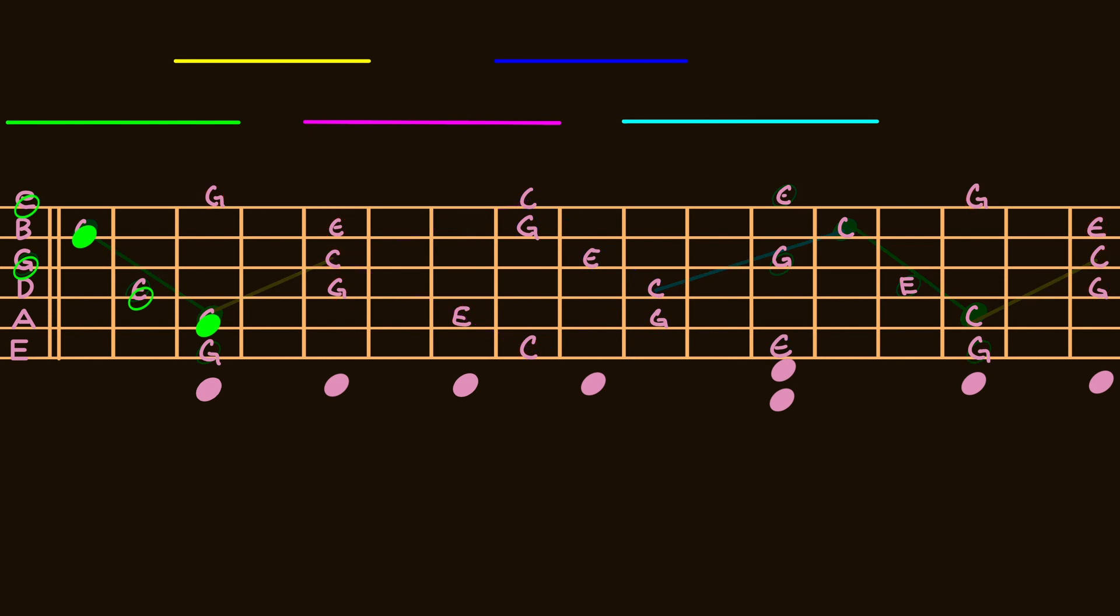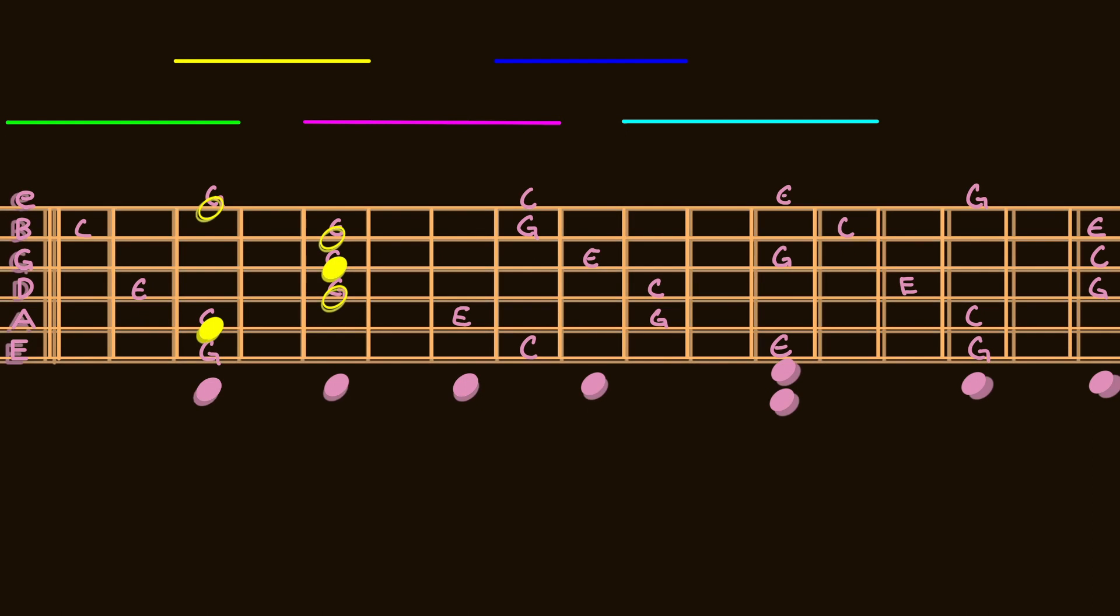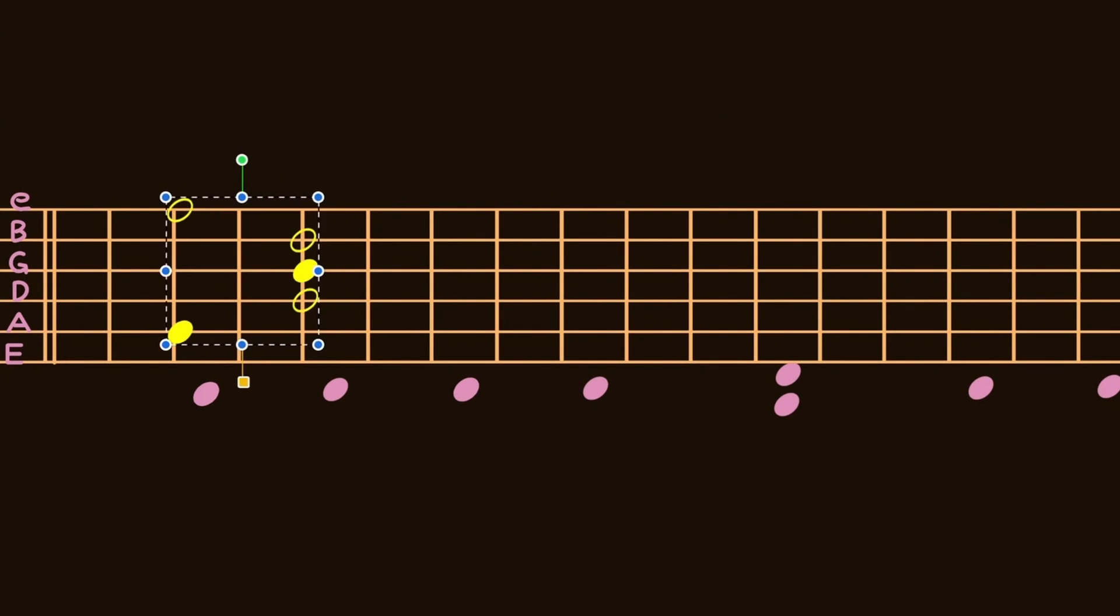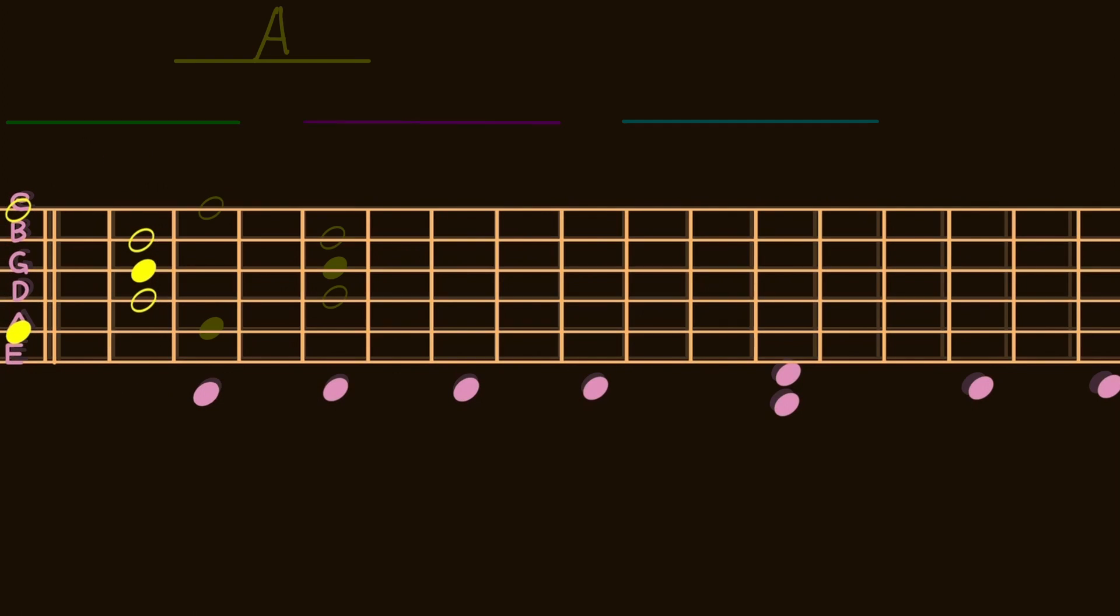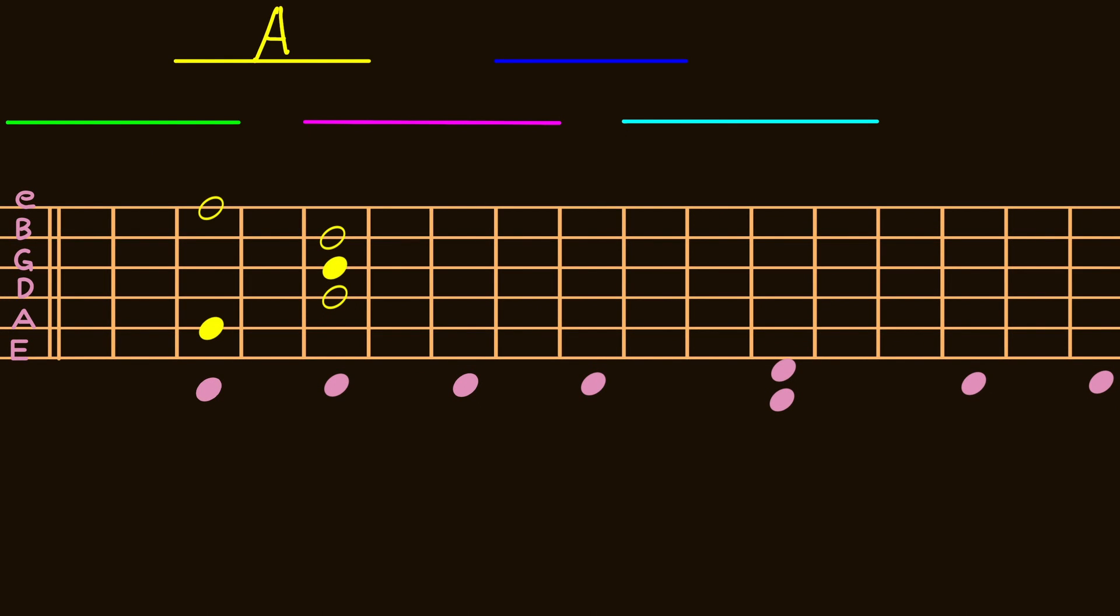We notice the first shape looks much like a C chord. If we take the next shape and move it until it matches an open position chord, we notice that it looks much like an A chord. So let's label that one as A.